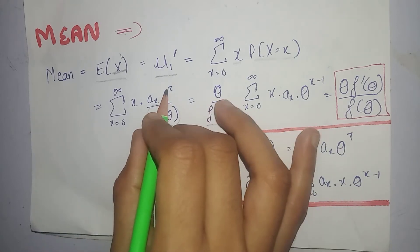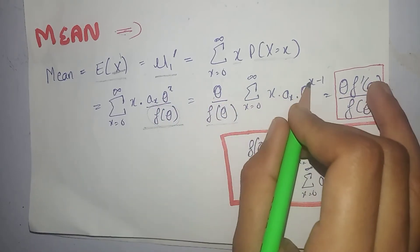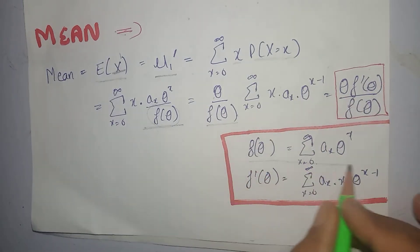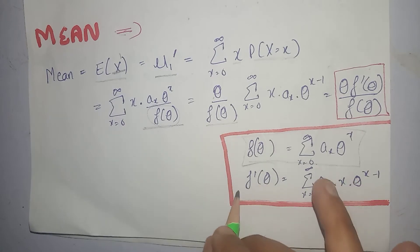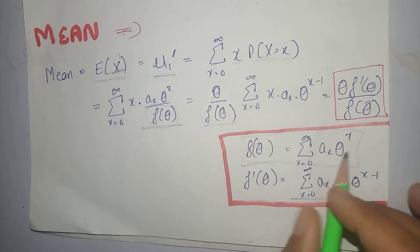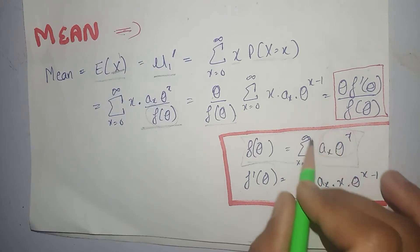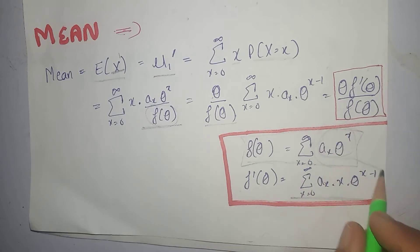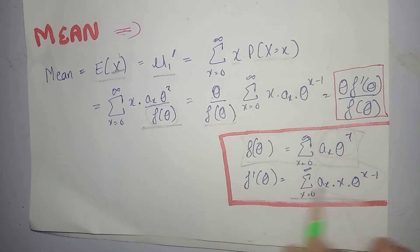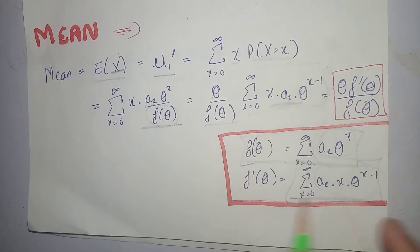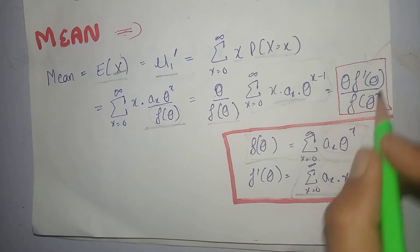Theta raised to power 1 bahar nikaal liya. Now hum jaante hain f(theta) ki value. Agar hum iski ek baar differentiation kar dein with respect to theta, toh hamare paas theta raised to power x minus 1 wali term aajayegi. Anderwali term ki theta ke with respect to differentiation karne par yeh aagaya. Now this whole term is equal to this whole term. That means hum yahan f dash theta likh sakte hain. So this is the mean of our power series distribution.